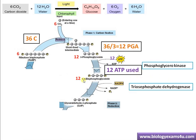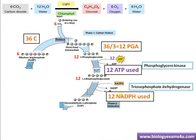In the next step, 1,3-bisphosphoglycerate is converted to glyceraldehyde-3-phosphate (G3P). The acid is converted to an aldehyde — this is a reduction step. NADPH synthesized in the light reaction is utilized and is converted to NADP⁺. The enzyme involved is dehydrogenase — whenever there is a reduction reaction, the enzyme involved is dehydrogenase. Since G3P is a three-carbon compound, it is called a triose phosphate. Here, 12 NADPH is utilized for forming 12 molecules of G3P. This phase is called the reduction phase.